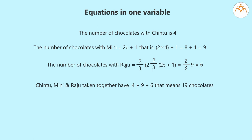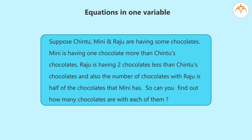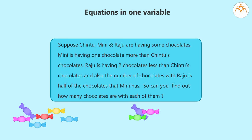You have understood all this properly, so now try to solve a similar practice example. Suppose Chintu, Mini and Raju are having some chocolates. Mini has one chocolate more than Chintu's chocolates. Raju has two chocolates less than Chintu's chocolates, and the number of chocolates with Raju is half of Mini's chocolates. Can you find out how many chocolates each one has? Try it out!